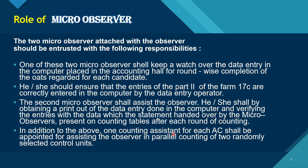In addition to the above, one counting assistant for each AC shall be appointed for assisting the observer in parallel counting of two randomly selected control units.